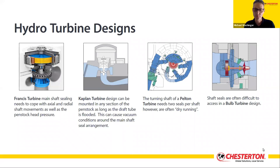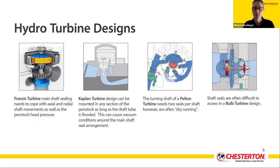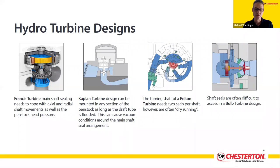The four most popular hydroturbine designs used around the world are the Francis, Kaplan, Pelton and Bulb type turbines. In 1848, James B. Francis improved on an original Fourneyron and Poncelet French design, and by 1920 the Francis turbine became the most common inward flow reaction turbine in use. It has a high efficiency of greater than 95%. Water flow and speed control are governed by wicket gates or guide vanes. It's best located at the bottom of a penstock, and the main shaft seal needs to cope with both axial and radial shaft movements as well as penstock head pressure.